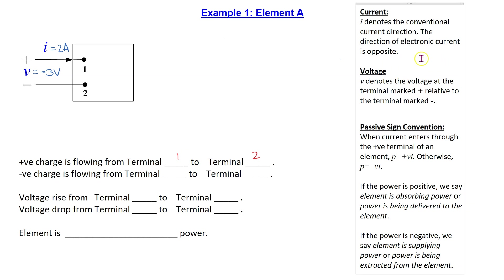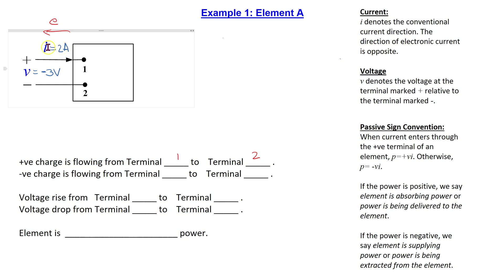The direction of the electronic current is opposite to the flow of the conventional current. Thus, electronic current is flowing in this direction. We can see that the negative charge is flowing from terminal 2 to terminal 1.